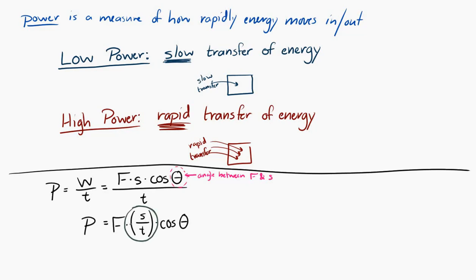Well, displacement per time is velocity. So we can say that the power is equal to the force on an object times its velocity times the cosine of theta, where theta is now the angle between the force and the velocity.